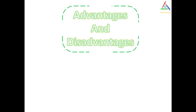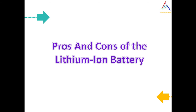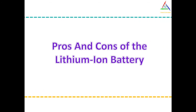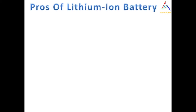Now let's talk about the advantages and disadvantages of lithium ion and lithium polymer batteries. Generally, both types of battery have their own pros and cons. For lithium ion batteries, the first pro is that it has very high energy density, due to which it can have high charge storing capacity and small size.